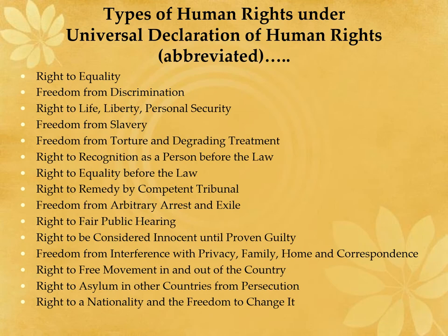There are 30 human rights under the Universal Declaration of Human Rights. The first is right to equality, freedom from discrimination, right to life, liberty and personal security, freedom from slavery, freedom from torture and degrading treatment, right to recognition as a person before the law, right to equality before the law, right to remedy by competent tribunal, freedom from arbitrary arrest and exile, right to fair public hearing, and right to be considered innocent until proven guilty.